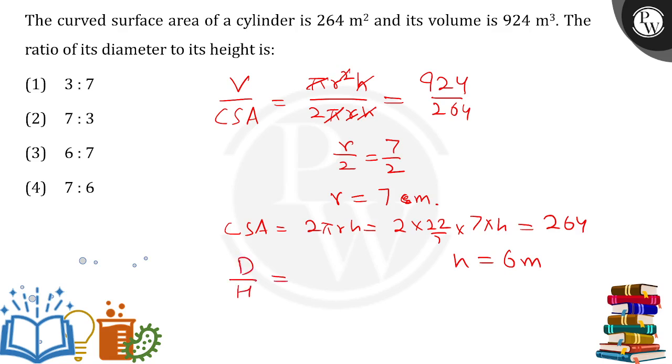7 into 2, that is 14 upon 6. So 14 upon 6, cancelling out by 2, this will be 7 by 3. So the ratio required is 7 ratio 3, our final answer, option number 2.